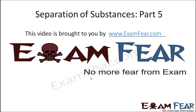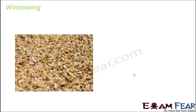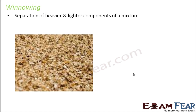This video on separation of substances part 5 is brought to you by examfear.com. The next process we will talk about is winnowing. In winnowing, we are able to separate particles which are of similar sizes but have a difference in their density — that is, one is heavier and the other one is lighter.